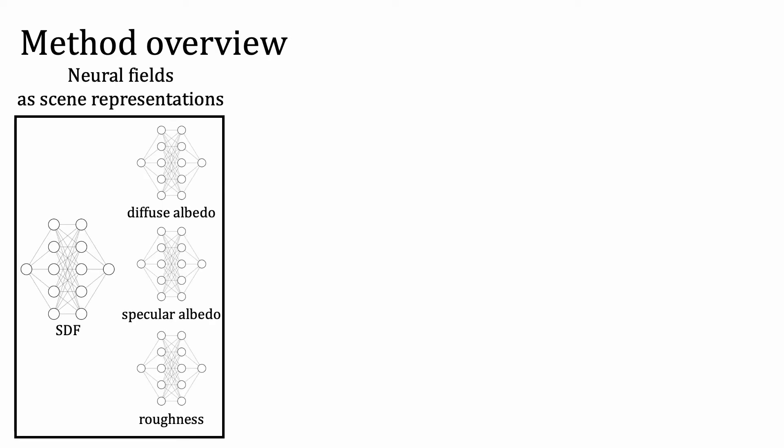We adopt neural fields as the basis for our scene representations because they are compact and friendly for optimization. We model geometry as a neural SDF represented by an MLP. Similarly, we represent spatially varying material parameters like diffuse albedo and roughness using MLPs.